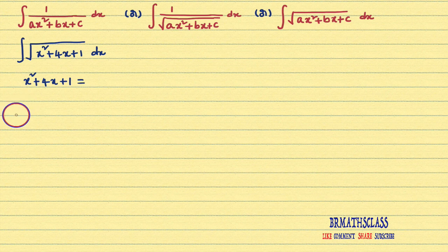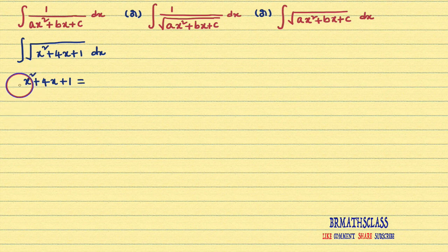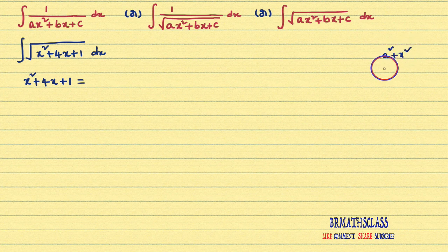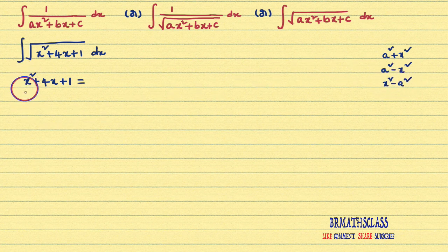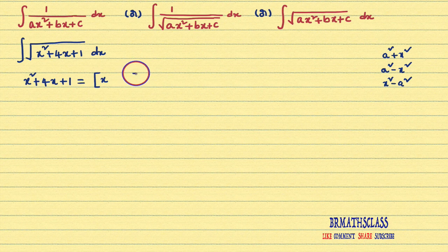If the x² coefficient is not 1, we make it 1 by taking that number common. In this problem, the x² coefficient is 1 only, so nothing to worry. Now, my main intention is to write this expression in any one of these forms: a² + x², a² - x², or x² - a². Here, since the x² coefficient is 1, a few things are fixed: brackets are fixed, x is fixed, whole square is fixed, and minus is fixed.